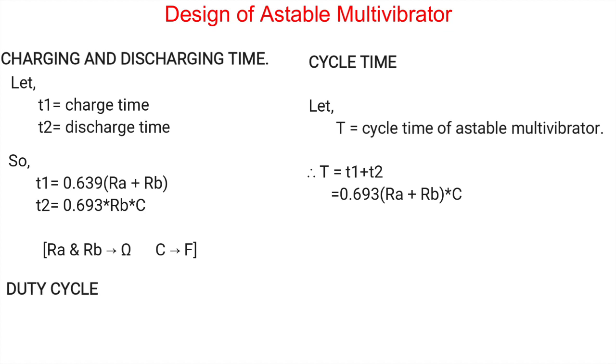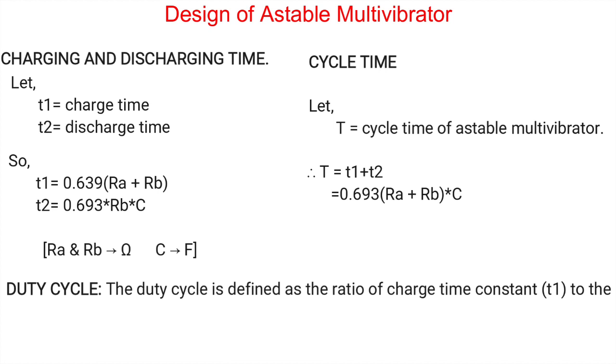Duty cycle time it is defined as the ratio of charge time which is constant that is T1 to the total cycle time that is capital T and for the A-stable oscillator, the duty cycle is found to be T1 divided by T. And then, we further substitute the value of T1 and capital T.